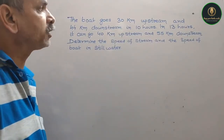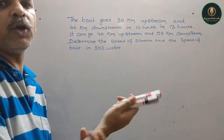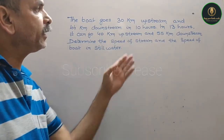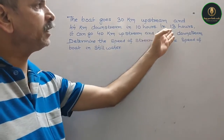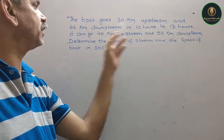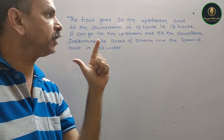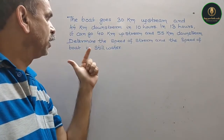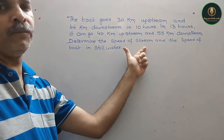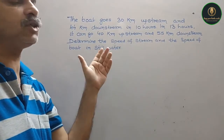The boat goes 30 km upstream and 44 km downstream in 10 hours. In 13 hours it can go 40 km upstream and 55 km downstream. Determine the speed of the stream and the speed of the boat in still water.